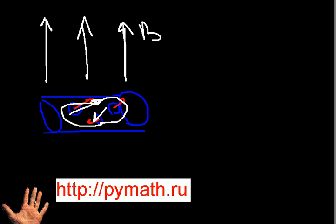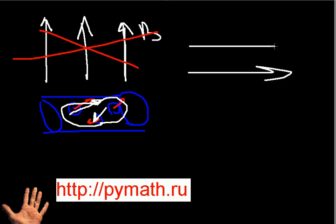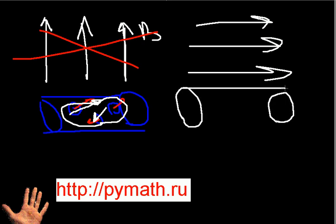If you take this magnet and place it in an external magnetic field — for example, directed in the following direction — here is the magnet, represented as a cylinder. The most amount of magnetic moments are now directed along this external magnetic field.